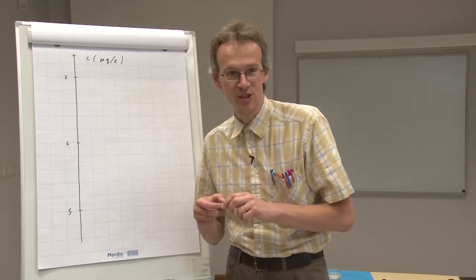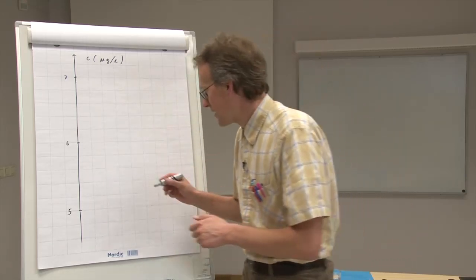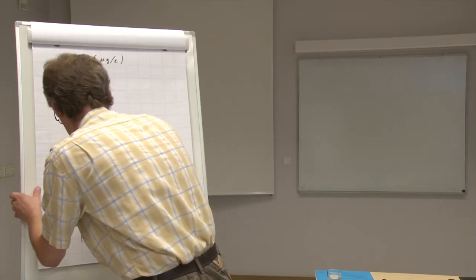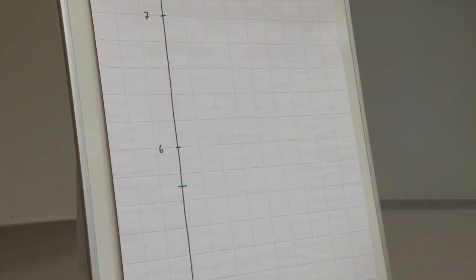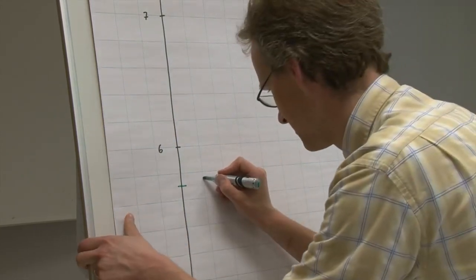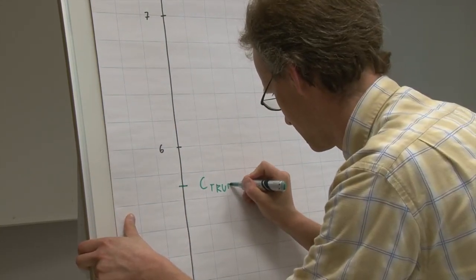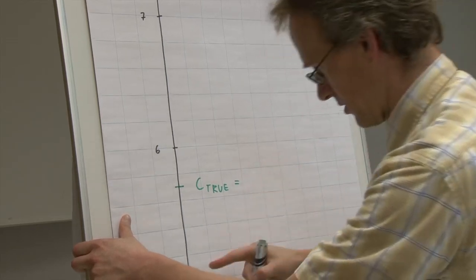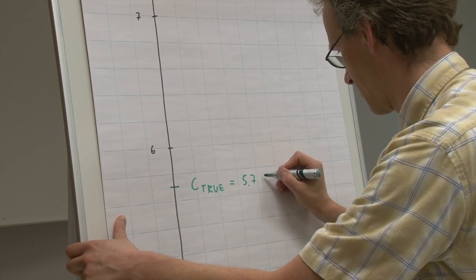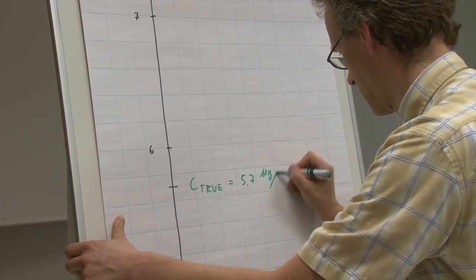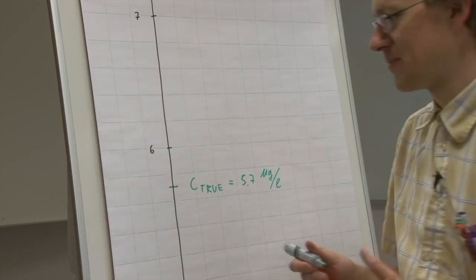Let us denote this true value here now. Let us assume it is somewhere here. So, we call it C true. And according to this scale, it is equal to 5.7 micrograms per liter.